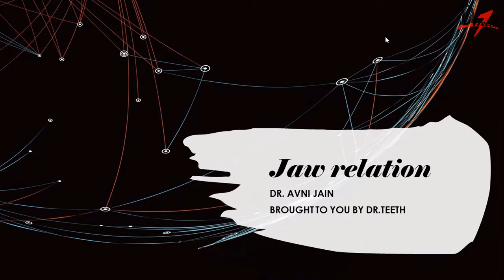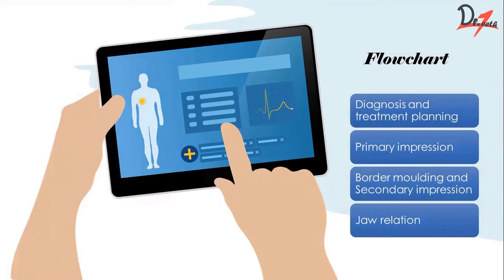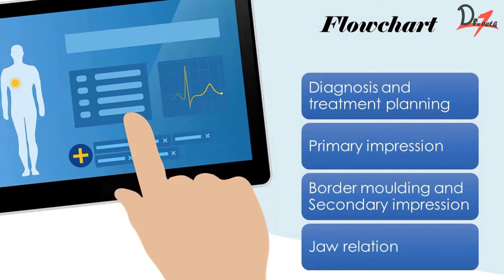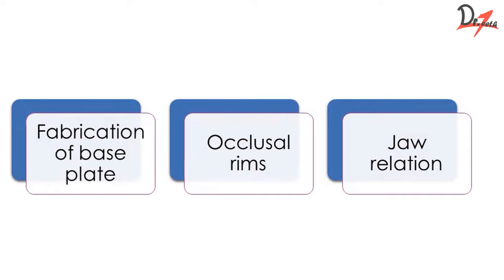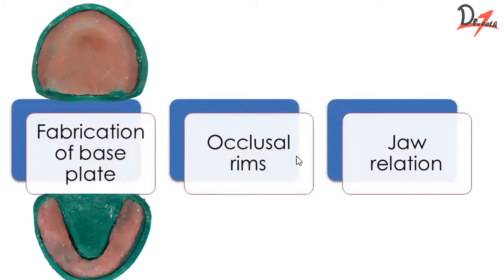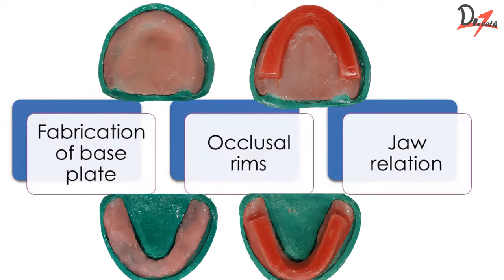Before starting our discussion, I'll go through the steps for the fabrication of complete denture. When you get a patient in which you have to fabricate a complete denture, you will do the diagnosis and treatment planning, then go for primary impression, after that border molding and secondary impression, and finally jaw relation. But before doing the jaw relation, you need to do certain lab procedures: fabricate your base plate, then fabricate your occlusal rims, and finally go for jaw relation.